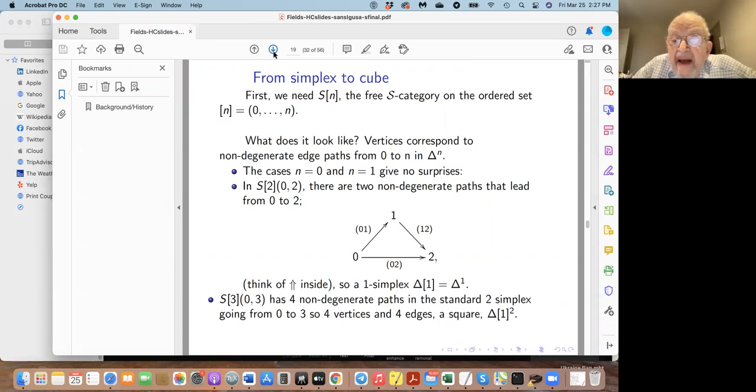So there's just one path at the bottom and one path over the top. Essentially, we have a one-simplex or a unit interval. You can think of that horizontal arrow as gradually moving up until it bends enough to fit onto the broken path. If we go to 3, life gets more interesting. There are four non-degenerate paths in the standard 2-simplex going from 0 to 3. So there are four vertices and four edges. We get a square. In general, we get an (n-1)-cube. That's the reason this section is titled 'from simplex to cube,' because this pattern will appear again and again.